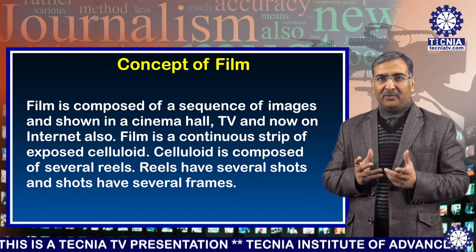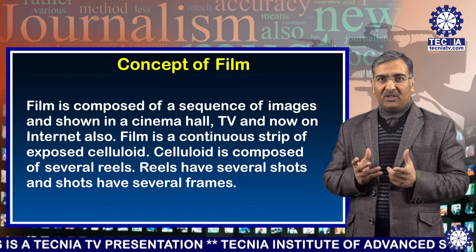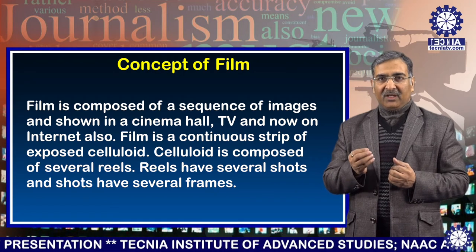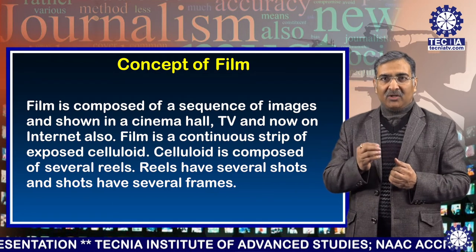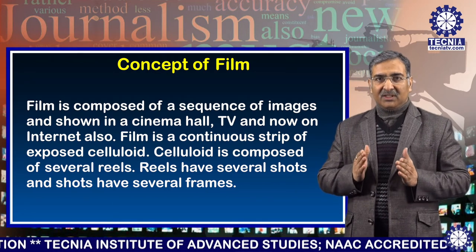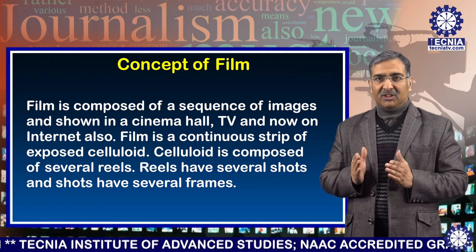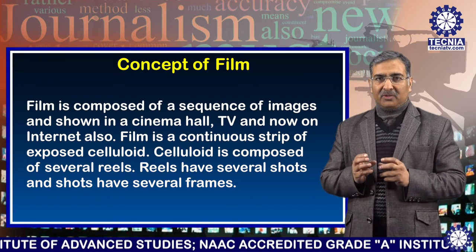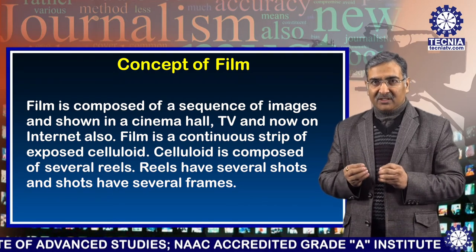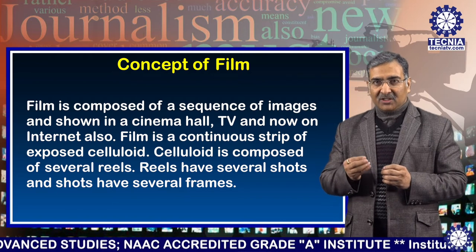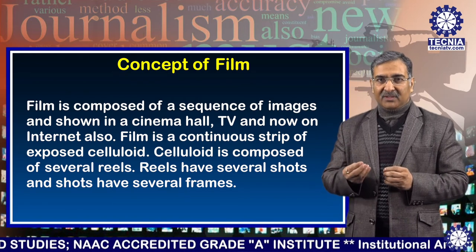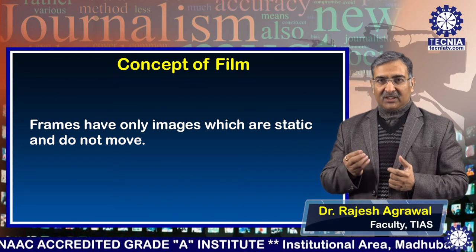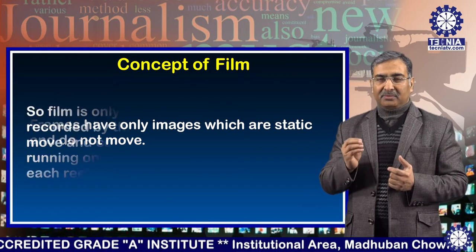Film is composed of a sequence of images and shown in a cinema hall, TV and now on internet also. Film is a continuous strip of exposed cellulite material. Cellulite is composed of several reels. Reels have several shots and shots have several frames. Frames have only images which are static and do not move.